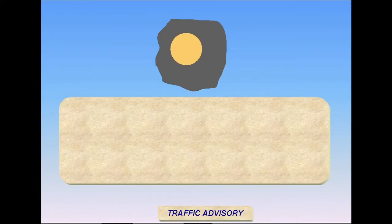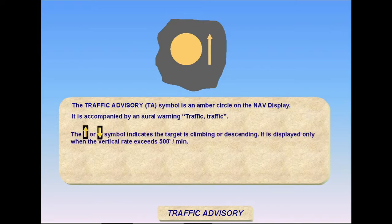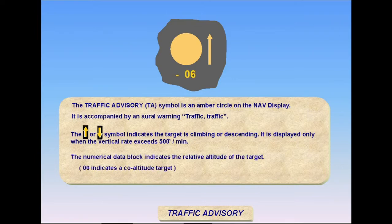The TA symbol is an amber circle with a data tag used to report relative altitude and vertical path trends and is accompanied by the aural message, Traffic! Traffic! The vertical arrow is displayed only when the target's vertical rate is greater than 500 feet per minute. The data tag always displays relative altitude separation. A target without an encoding transponder is always displayed as co-altitude traffic with no trend arrow. No resolution advisories are available in this case.